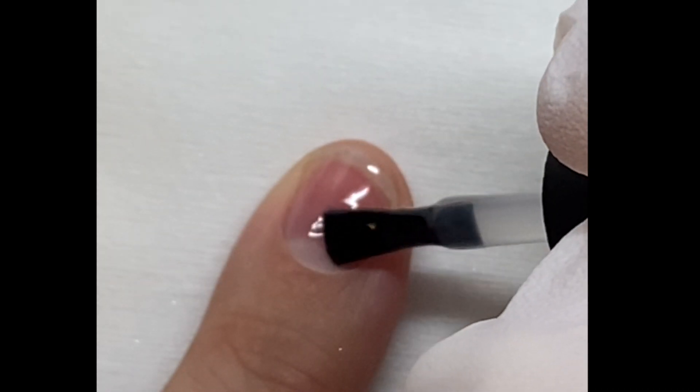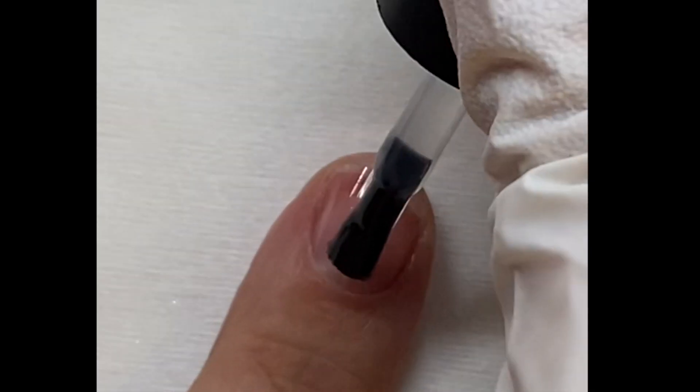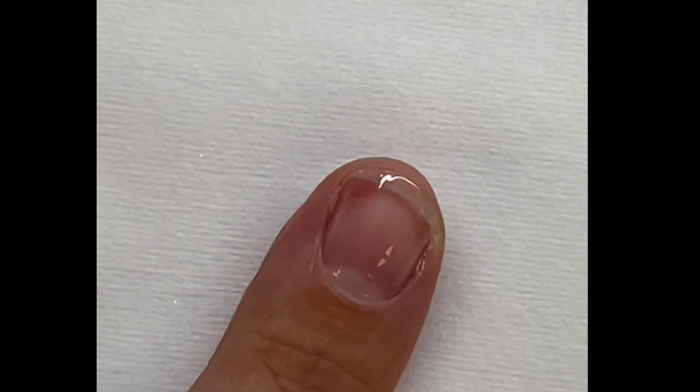You can really take your time applying it and make sure that you get it really close to the proximal fold. What's so great about it is that it stays put. Just make sure you wipe the brush off good on the neck of the bottle before you start to apply it because you don't want to apply it thick.